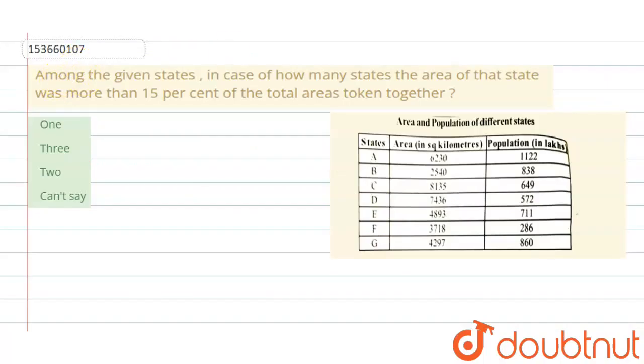Next question is: among the given states, in case of how many states the area of that state was more than 50% of the total area taken together? Four options are provided. Option one is one, option two is three, option three is two, and option four is can't say.